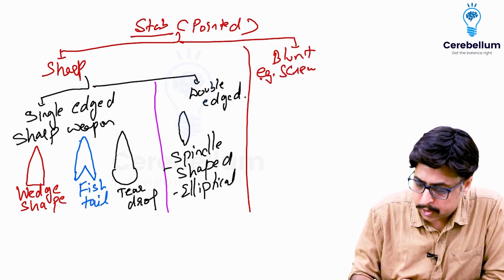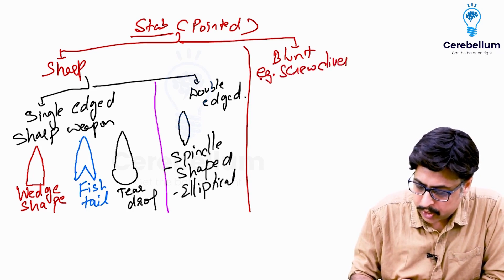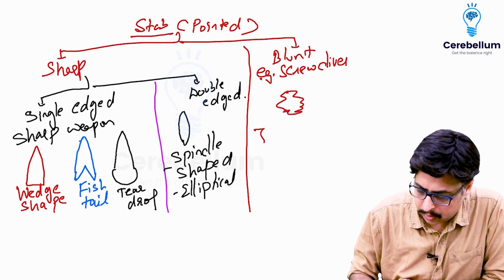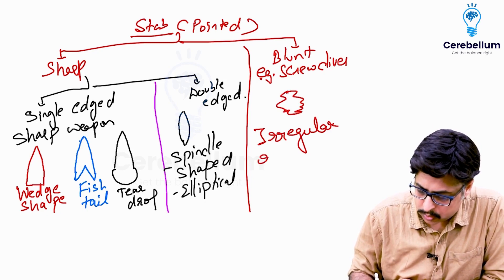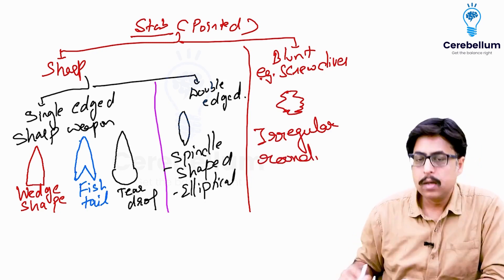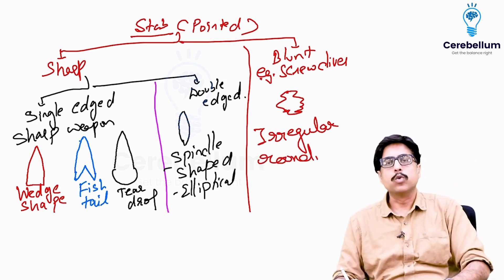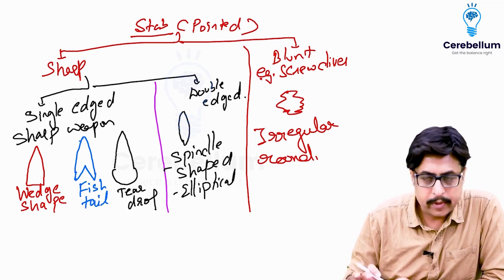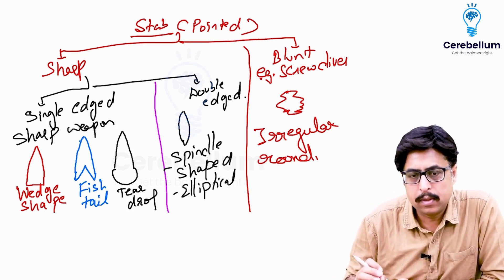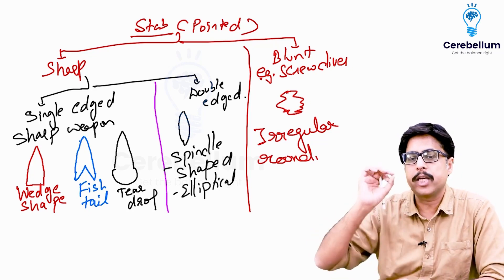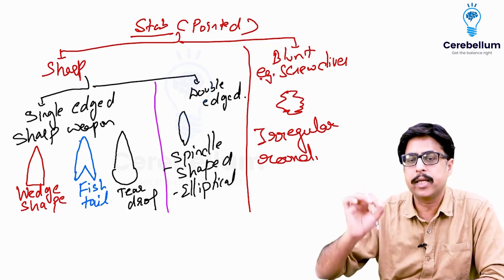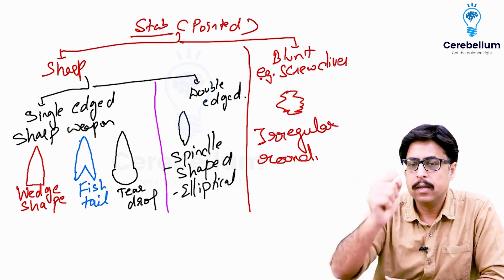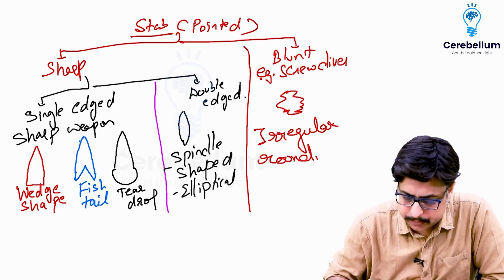Another scenario: when the wound is produced by a blunt pointed object — typical example is a screwdriver — the shape will be irregular round. So these are the very commonly asked questions: the type of shape seen in a single-edged weapon, the shape seen in a double-edged weapon, and the shape seen in a blunt pointed object.